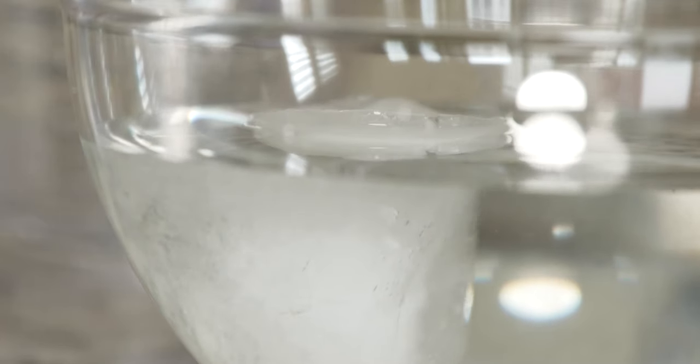This is a demonstration of how icebergs float in the ocean. As you can see, only a very small portion of the iceberg can actually be seen above the water, while about 90% of it is below the water's surface.